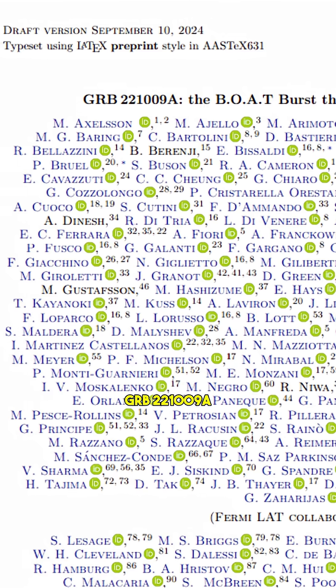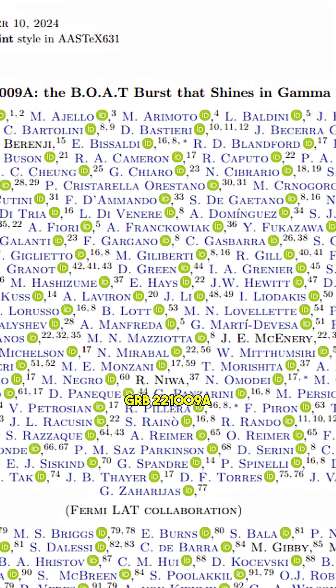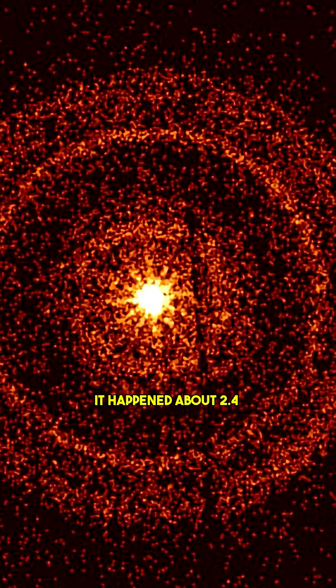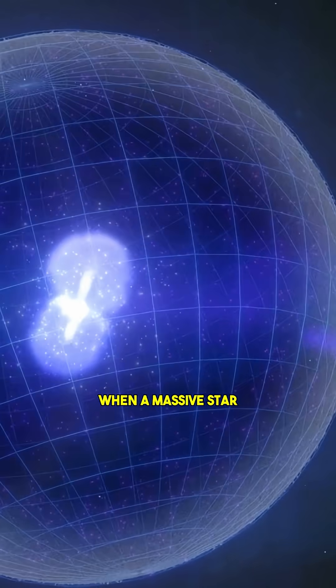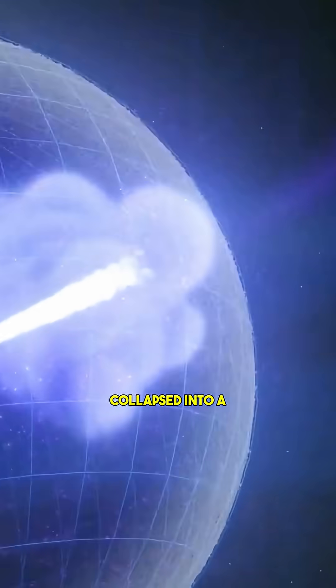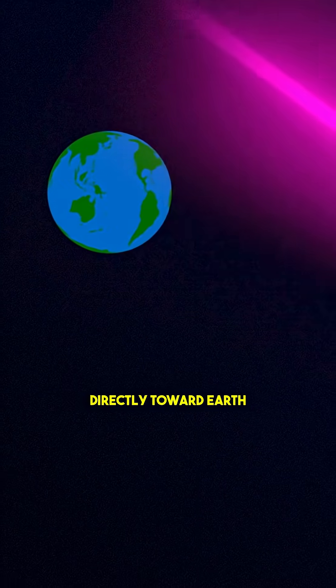This was GRB-221009A, nicknamed the boat, short for brightest of all time. It happened about 2.4 billion light years away, when a massive star collapsed into a black hole, launching relativistic jets of plasma directly toward Earth.